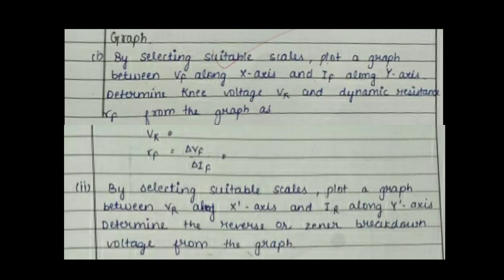This image shows how the graph has to be plotted for this practical. The aim of the experiment is to obtain the characteristic curve, which means the graph must be plotted. Therefore, the method of plotting the graph is very important for this practical.